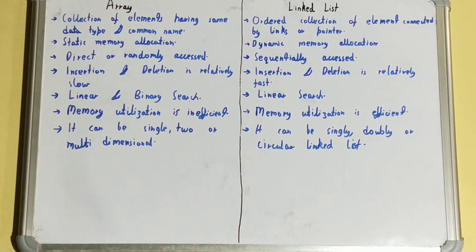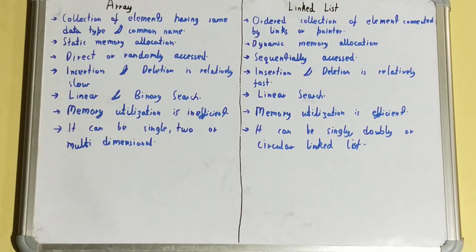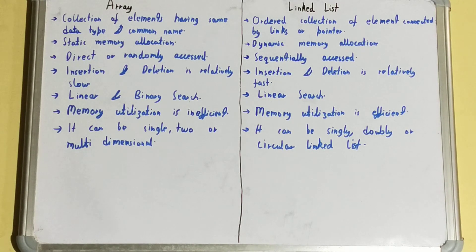That covers the basic differences between an array and a linked list. In a way, linked lists are better than arrays because their memory allocation is more efficient for storing data. Arrays are easier to understand and use, but due to static memory allocation they are somewhat inefficient.